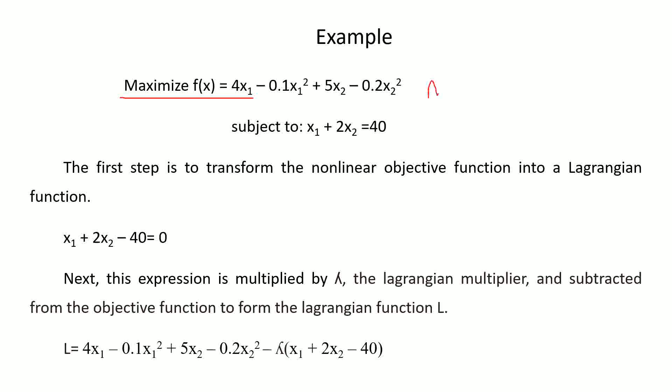This is a non-linear function because the exponent is quadratic — greater than 1. It is subjected to a constraint. The first step is to transform this non-linear objective function into the Lagrangian function.